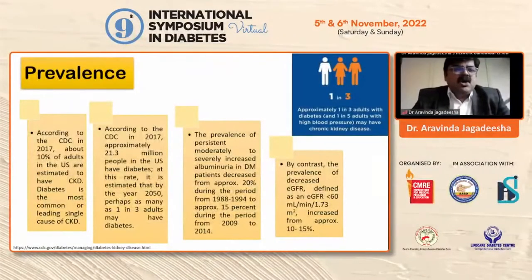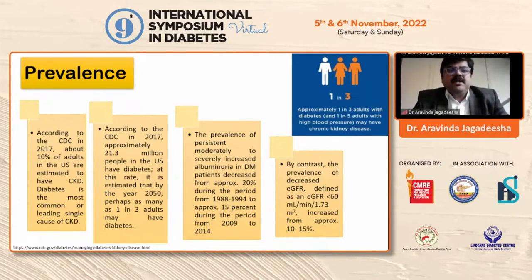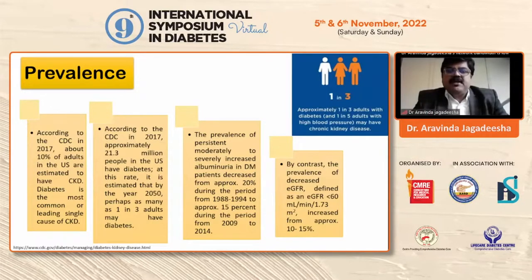Regarding prevalence, according to the CDC in 2017, about 10% of adults in the U.S. are estimated to have CKD. Diabetes is the most common leading cause of CKD. Approximately 21.3 million people in the U.S. have diabetes, and it is estimated that by 2050, perhaps as many as one in three adults may have diabetes. The prevalence of persistently moderately to severely increased albuminuria in diabetes patients decreased from approximately 20% during 1988–1994 to approximately 15% during 2009–2014.